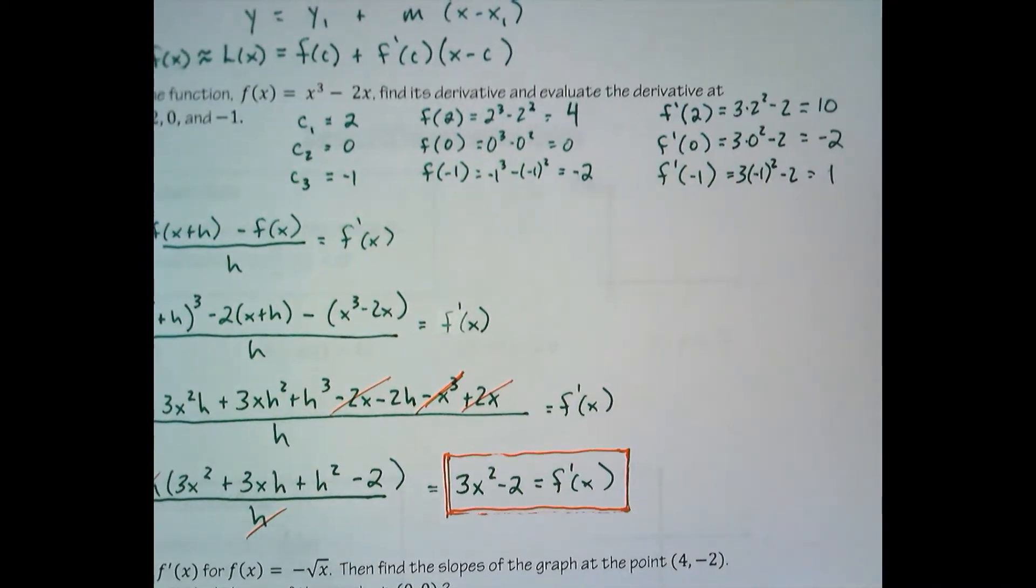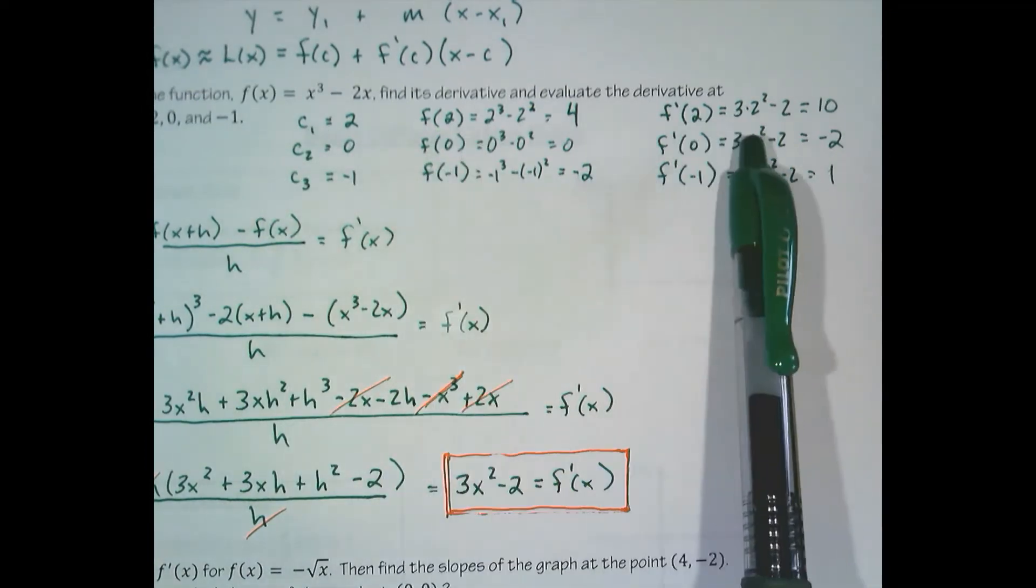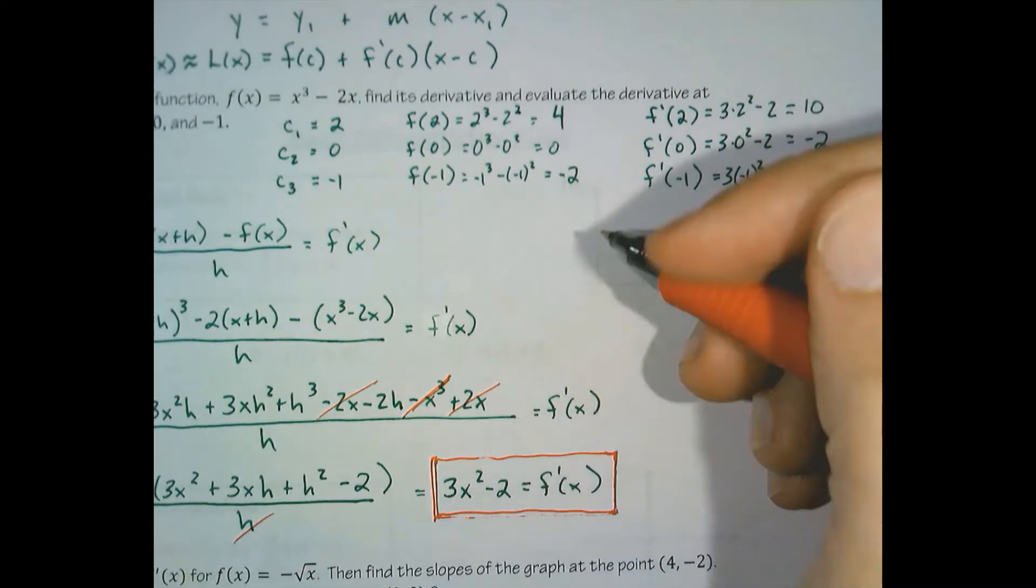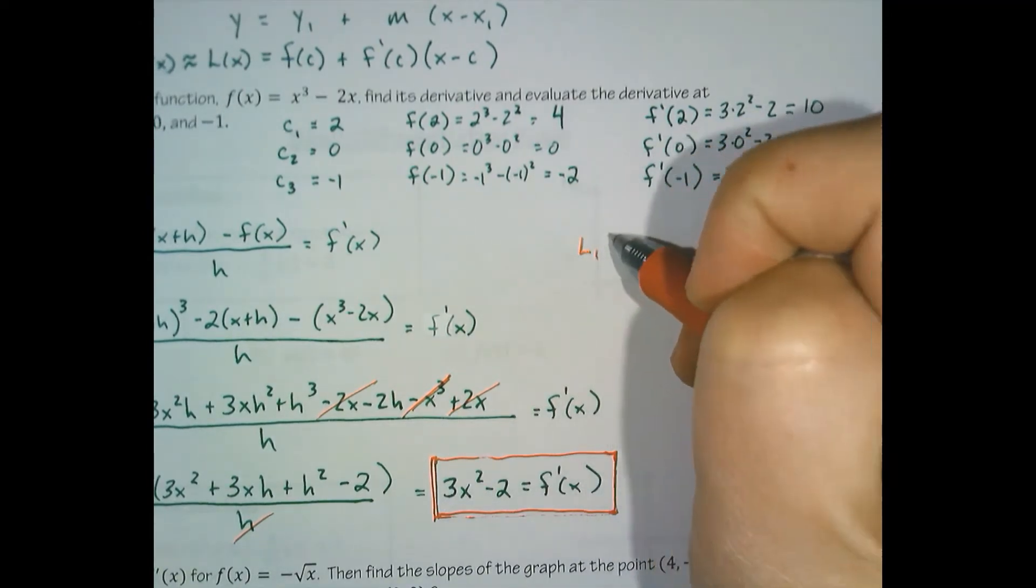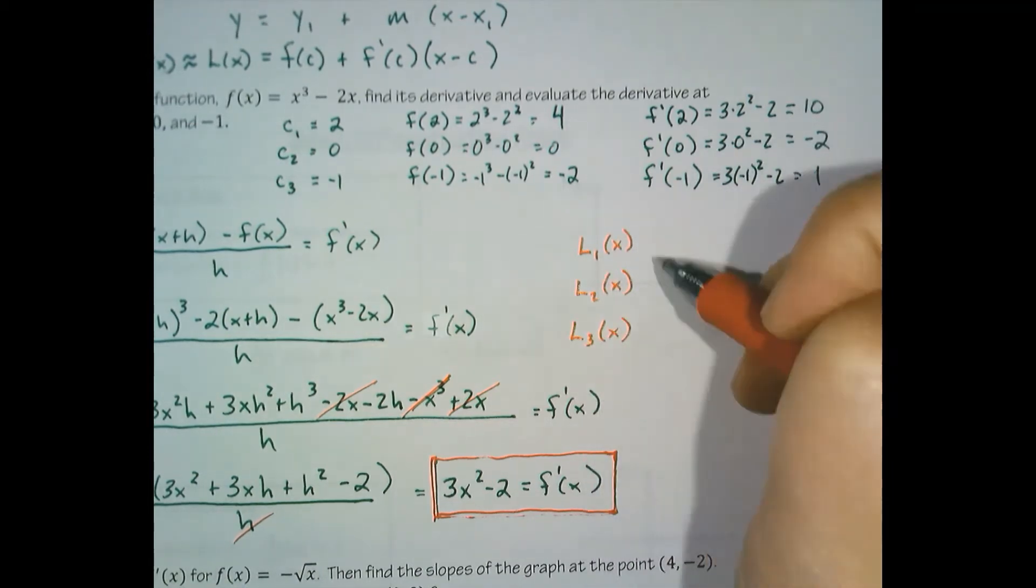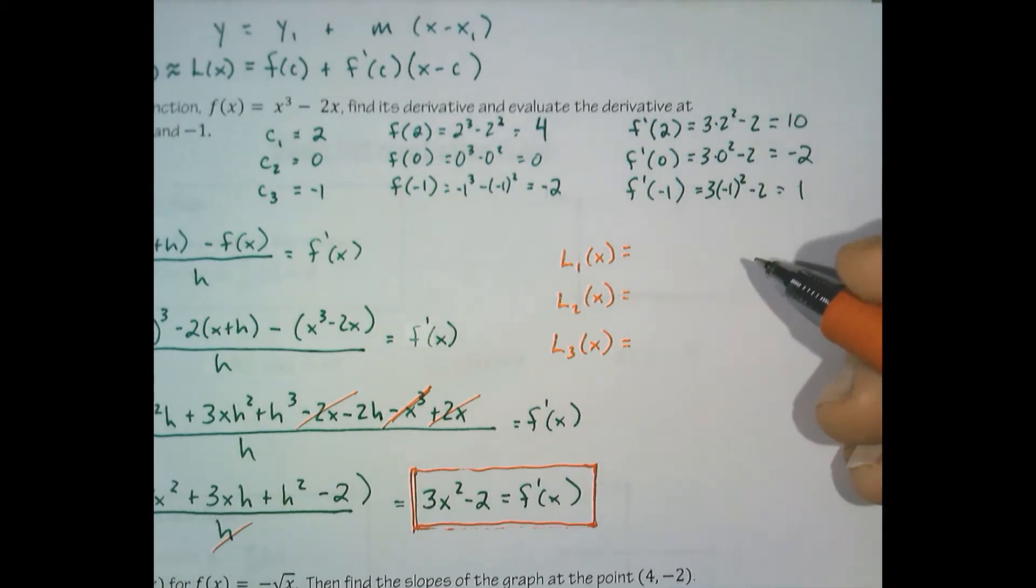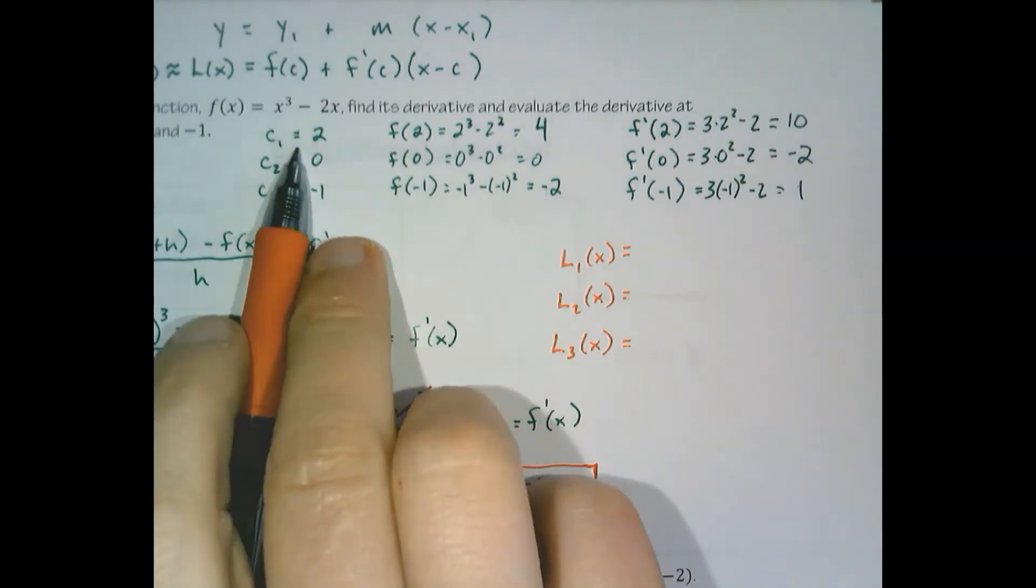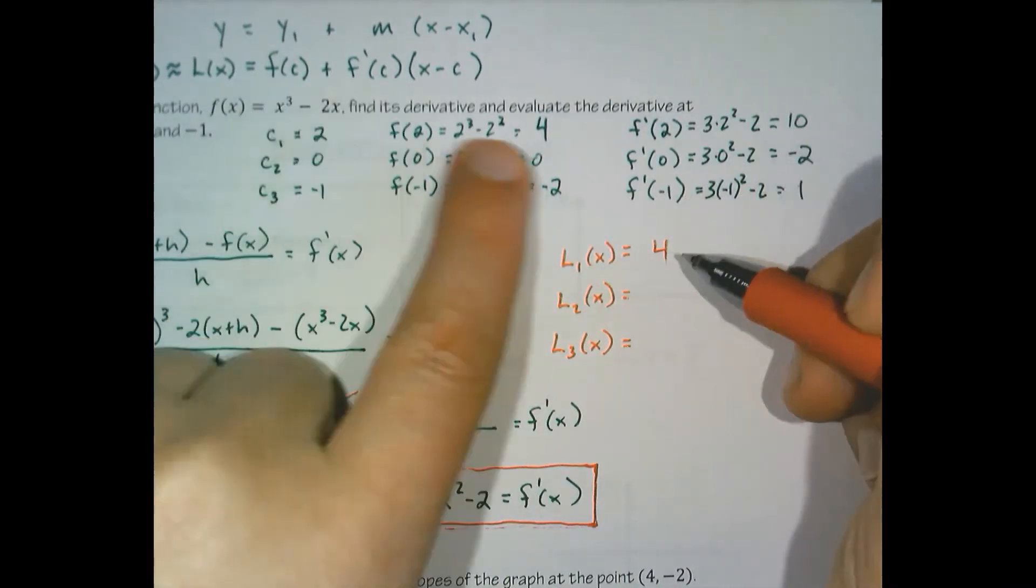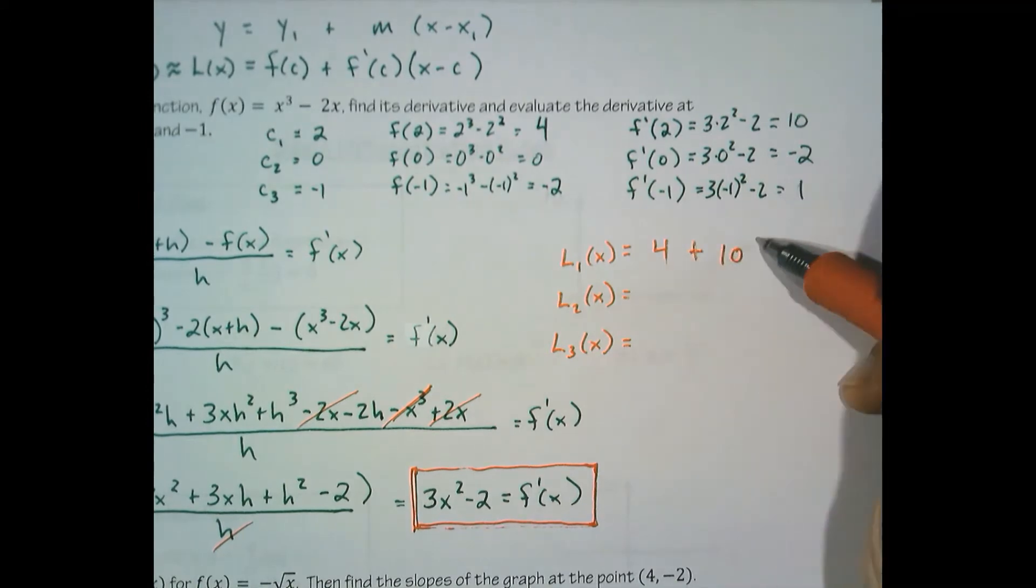So there we have it. We have our centers, we have our functions evaluated at our centers, and we have our derivatives evaluated at our centers. So now we should be able to set up three tangent lines. So f of the center is four plus f prime of the center, 10 times x minus the center.